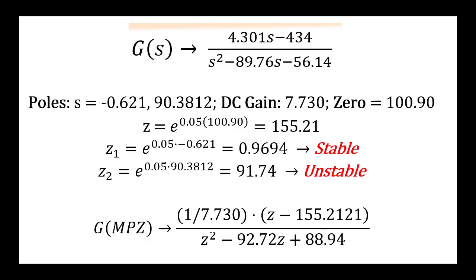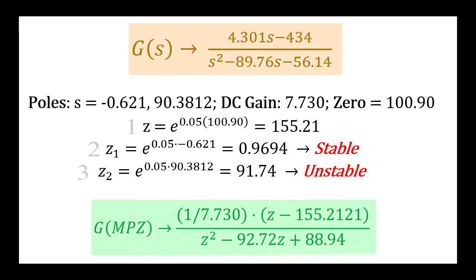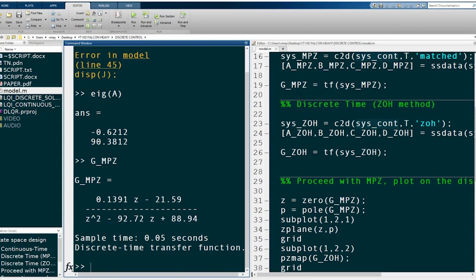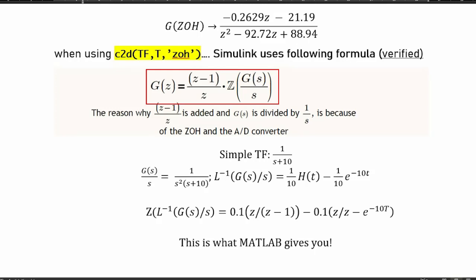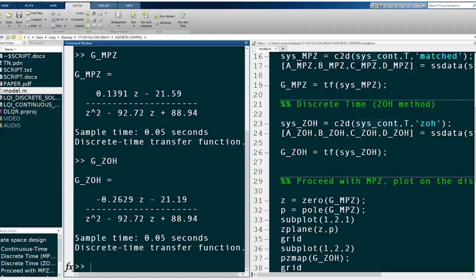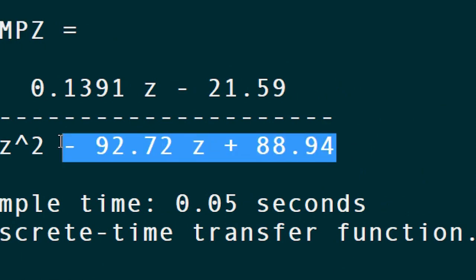Let's do these by hand so you get a full understanding. We start with our transfer function in the continuous time domain. Executing the steps gives us the matched pole-zero form, and if you check in MATLAB it is exactly the same. Similarly, for the zero-order hold form, we can use the standard formula. Let's verify with MATLAB using the simple function G of s equals 1 over s plus 10 — and we see that the denominator for both methods is exactly the same, with the numerator being slightly different.